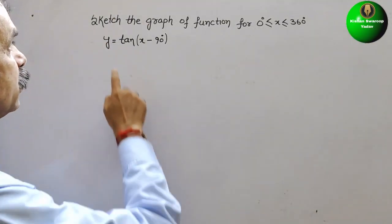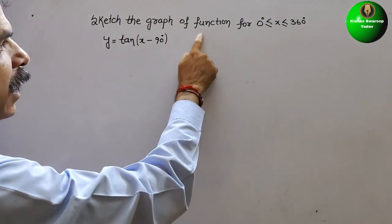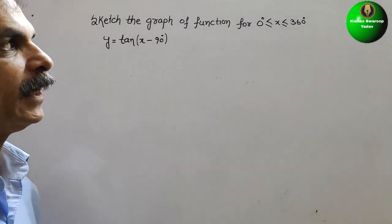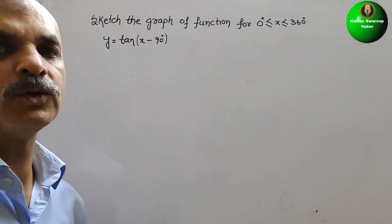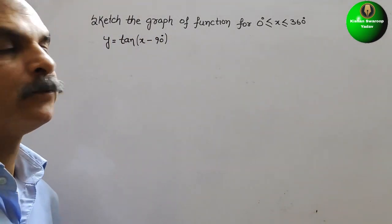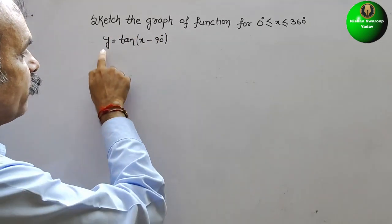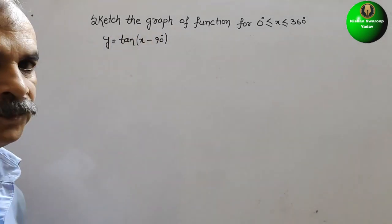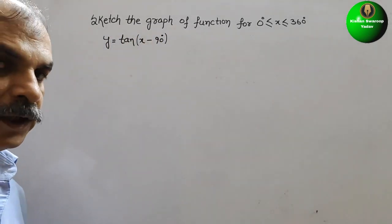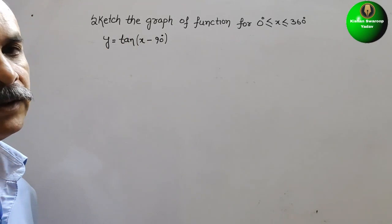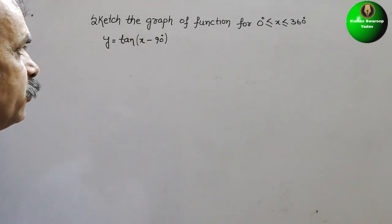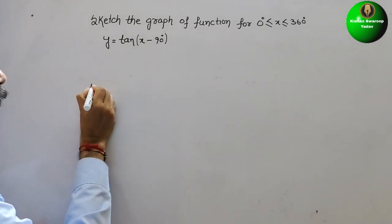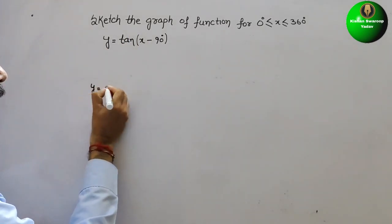The question is: sketch the graph of the function for 0° ≤ x ≤ 360°. Here they have given y = tan(x - 90°). So first we will make y = tan(x).